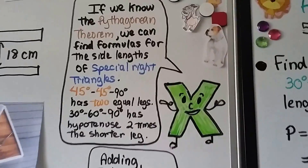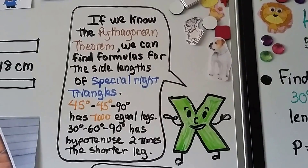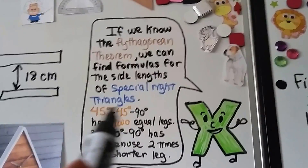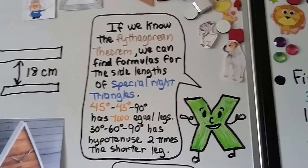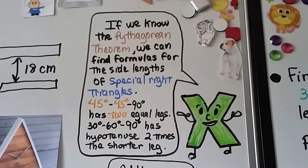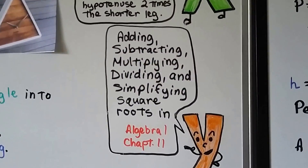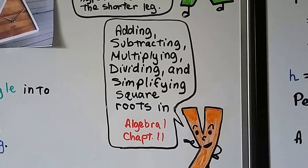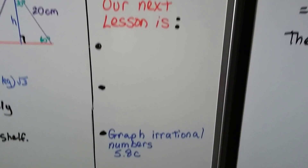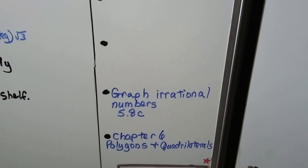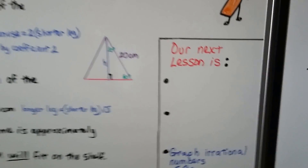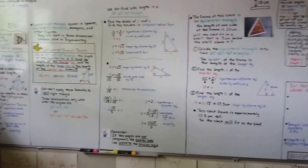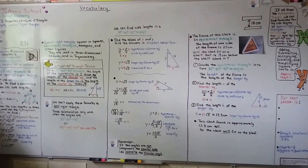If we know the Pythagorean theorem, we can find formulas for the side lengths of special right triangles. The 45-45-90 triangle has two equal legs — its two equal angle measures remind you of the two equal legs. The 30-60-90 triangle has a hypotenuse two times the shorter leg. If you're having trouble simplifying square roots and radicals, go to Algebra 1 Chapter 11 for a review. Our next lesson is 5.8c, where we graph irrational numbers, and then we move into Chapter 6.